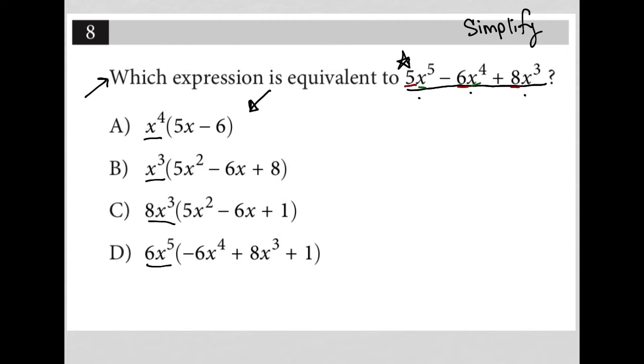So between x to the fifth, x to the fourth, and x to the third, our GCF is x to the third. We always go with the smallest exponent.